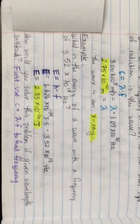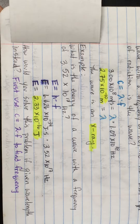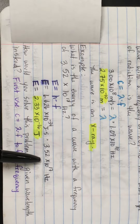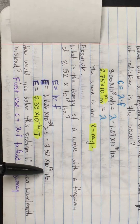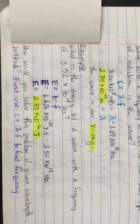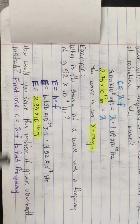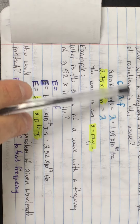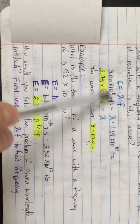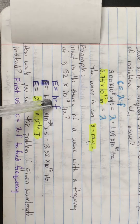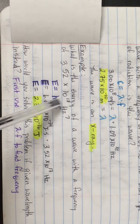On the left side of our notebook, the example problem asks: what is the energy of a wave with a frequency of 3.52 times 10 to the 17th hertz? We're going to multiply the frequency, 3.52 times 10 to the 17th hertz, by Planck's constant, or H, which is 6.626 times 10 to the negative 34th joule seconds. Multiplying these two numbers gives us 2.33 times 10 to the negative 16th joules. As a follow-up: if you were given wavelength instead, you'd use c is equal to lambda times f, plugging in the wavelength and the speed of light to calculate the frequency — then use E is equal to H times f with Planck's constant to find the energy.